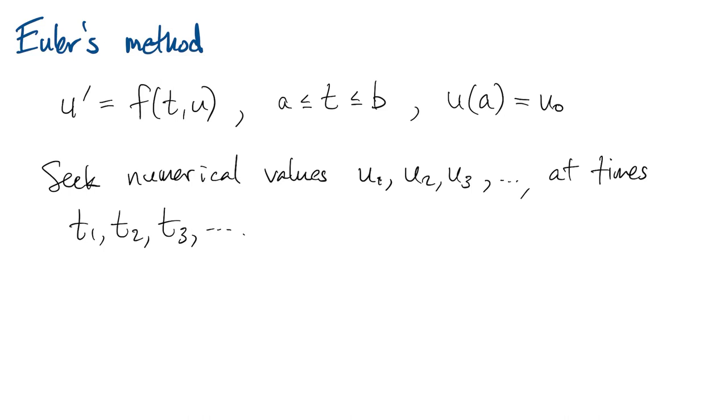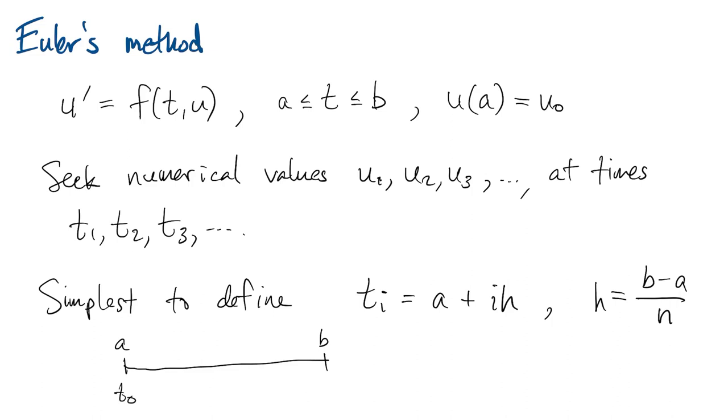These values will only be approximate, of course. It's simplest for us to use equally spaced nodes, so we define ti as a plus ih for grid spacing h. Then these nodes stretch uniformly from a to b.